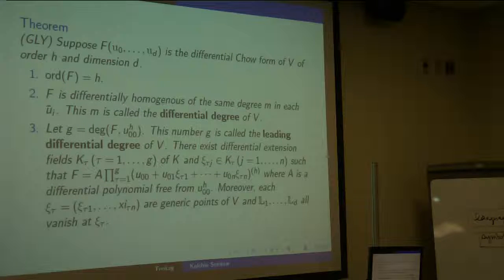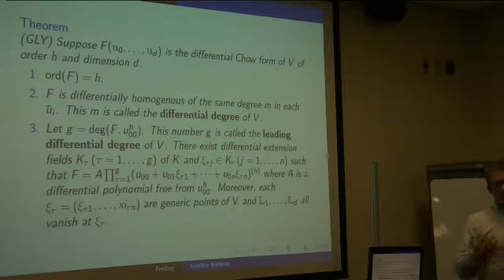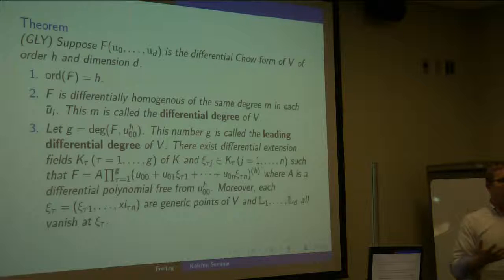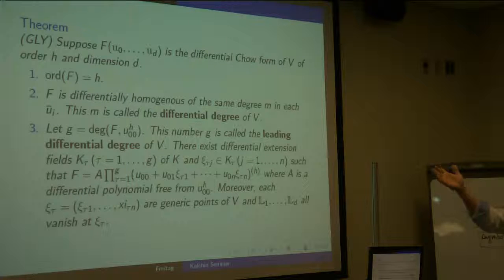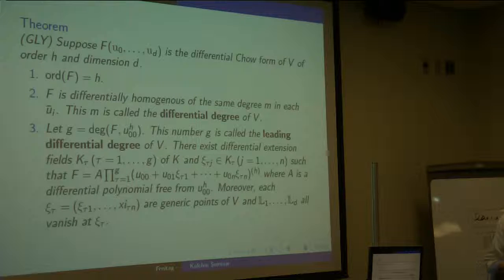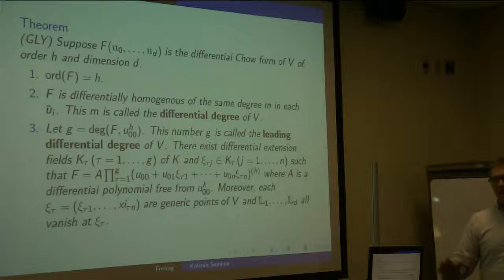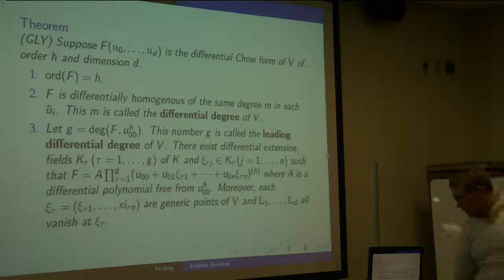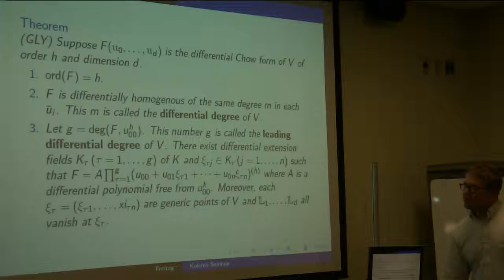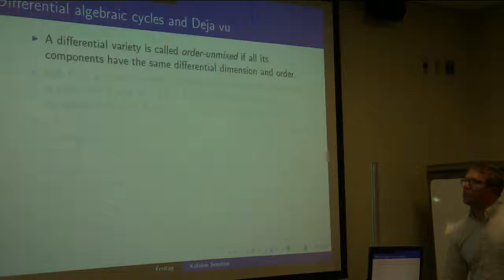For Chow forms and Chow varieties, we fixed the dimension and the degree. In the differential case, fixing the dimension and the order is akin to fixing the Zariski dimension, and fixing these two things — the differential degree and leading differential degree — is what GLY regarded as akin to fixing the degree of the differential variety.